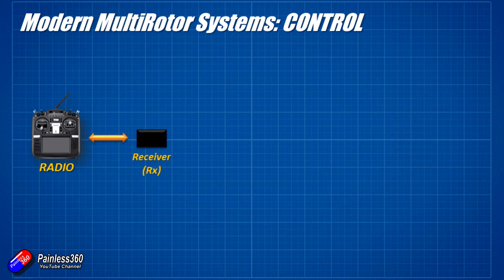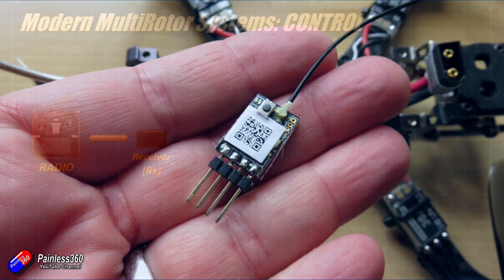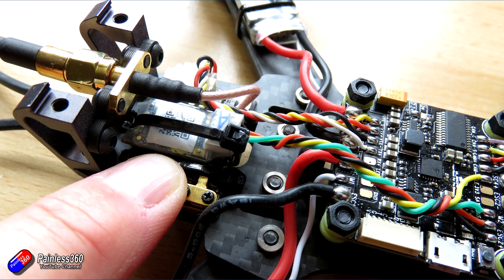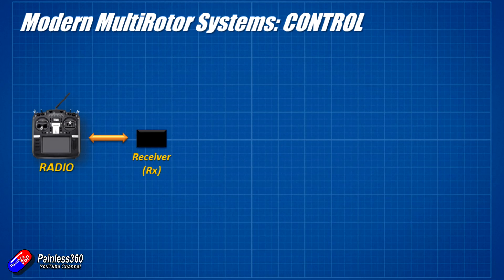Receivers in multirotors tend to be very small — about the size of a fingernail — typically with two antennas and only four or five outputs. Those outputs are typically things like SBUS that plug into your flight controller, and there may be an input to send telemetry back down to the radio. The radio link between the radio itself and the receiver is typically 2.4 gigahertz. However, with things like Crossfire, R9M and other long-range systems, those are going to be running on 868 or 915 megahertz — a much lower frequency.